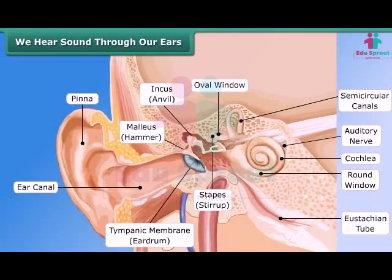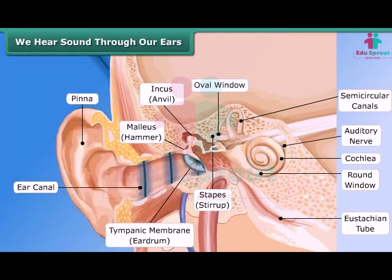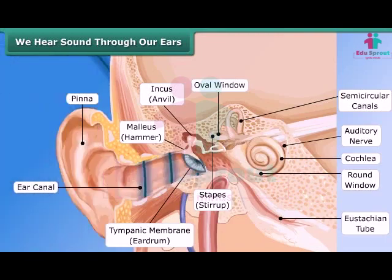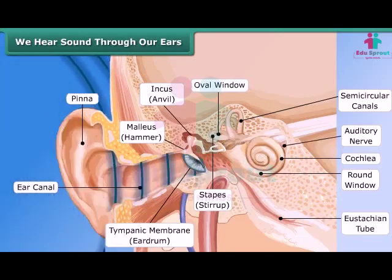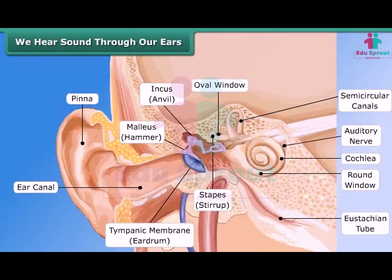We hear sound through our ears. The shape of the outer part of the ear is like a funnel. Sound enters and travels down a canal, at the end of which a thin membrane is stretched tightly, called the eardrum. Sound vibrations make the eardrum vibrate, and the eardrum sends vibrations to the inner ear, and through the inner ear it goes to the brain. This is how we hear sound.